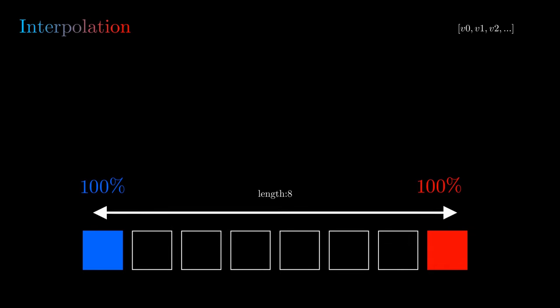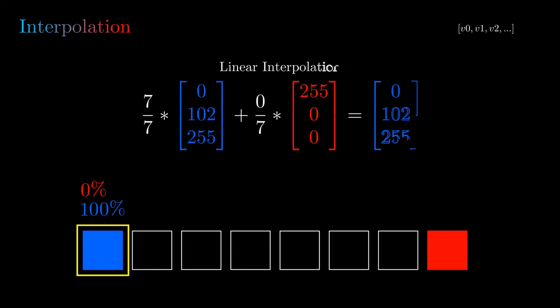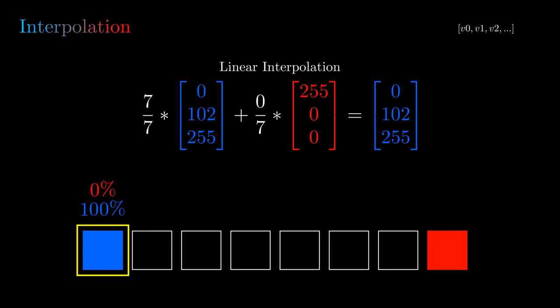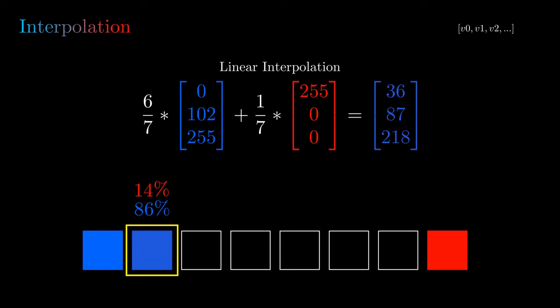On our first pixel, we have 100% of our blue and 0% of our red. We are using the linear interpolation. For the next pixel, we have 68% blue and 14% red, which results in this new color.